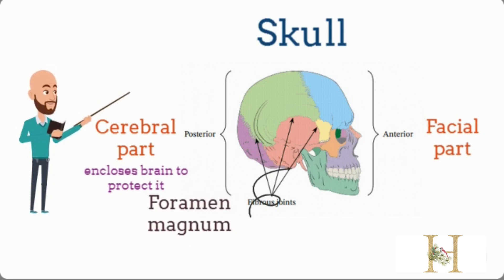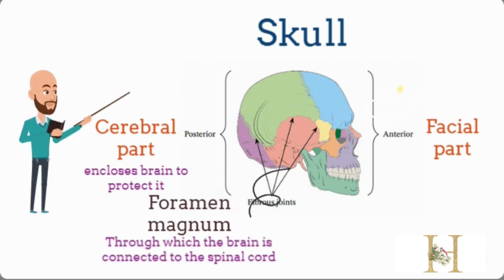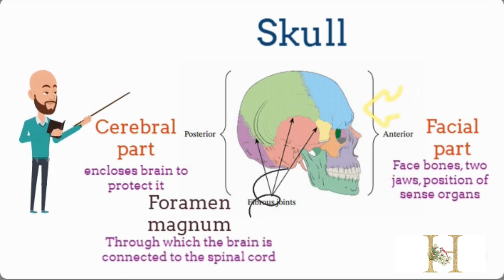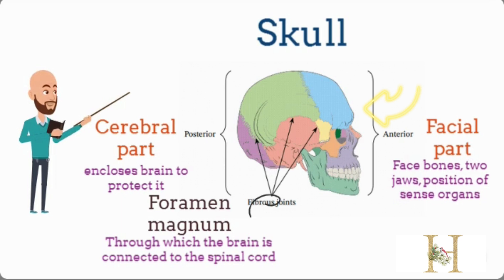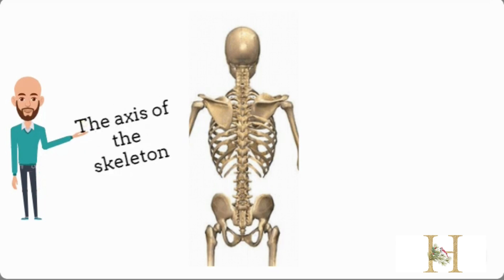At its base there is a foramen magnum through which the brain is connected to the spinal cord. The anterior part consists of 14 bones including the face bones, the two jaws, and the position of sense organs such as ears, eyes, and nose.